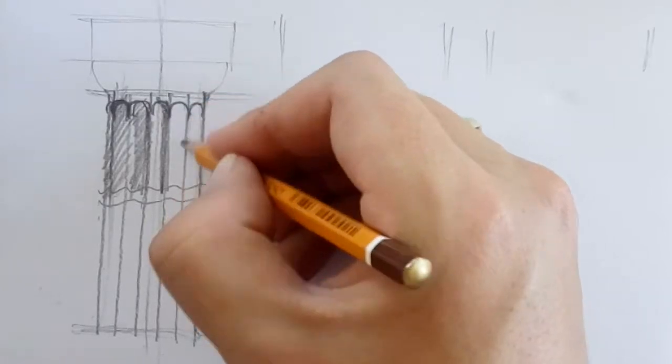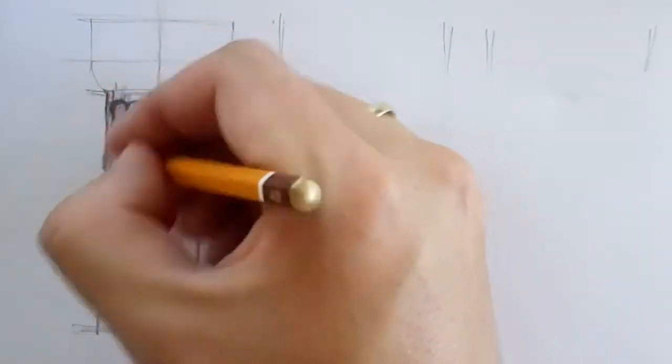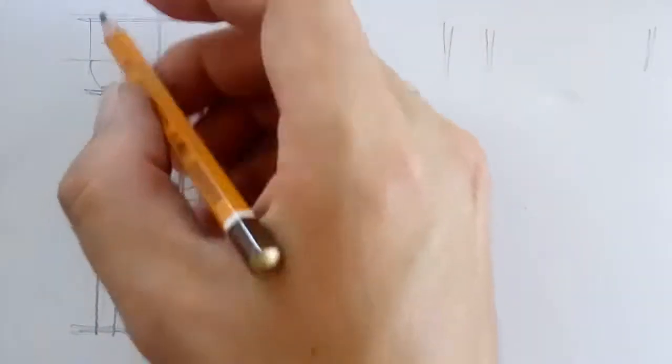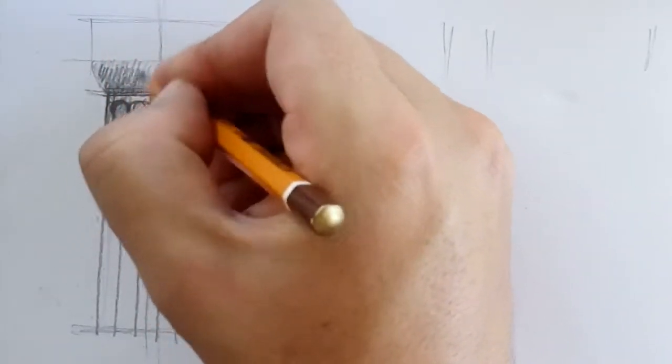The Doric column doesn't have a pedestal or base. It stands on the building ground directly.